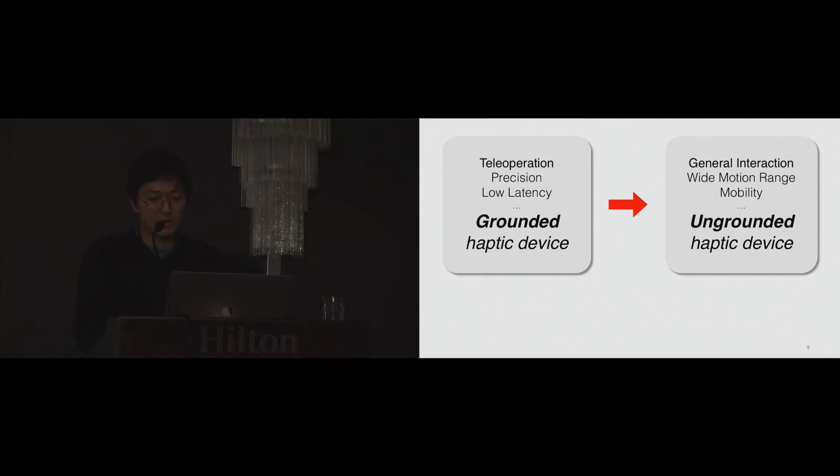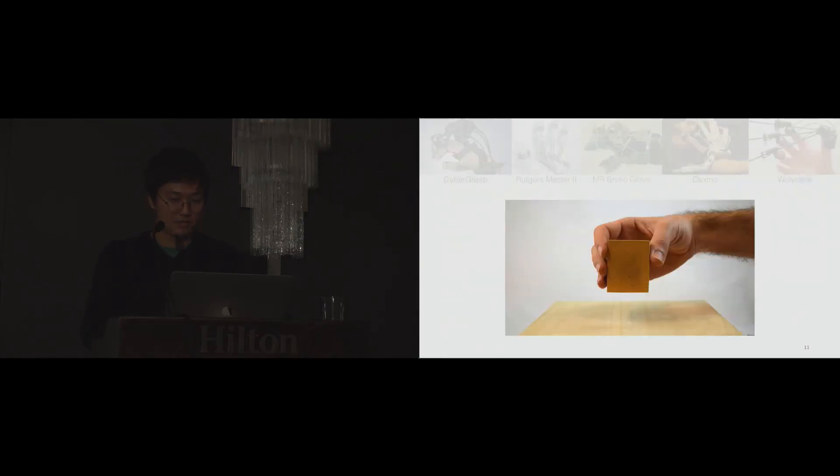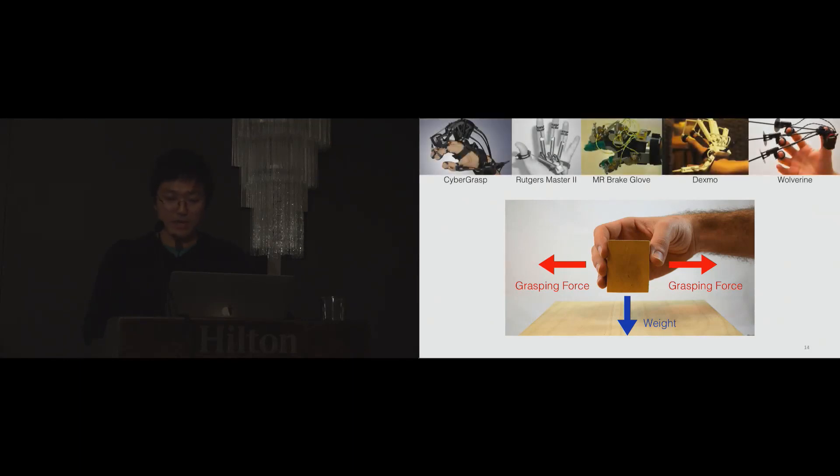However, there's a limitation among ungrounded haptic devices. Ungrounded haptic devices cannot provide external forces because they are not grounded to the outside through mechanical linkages, and we think this is a big limitation for VR applications. Let me give you an example. When a person grasps an object, there are grasping forces to the thumb and fingers, but also weight from the mass of the object due to gravity. There have been many haptic devices developed for grasping force feedback, however, these existing haptic gloves provide grasping forces only and do not render object weight.